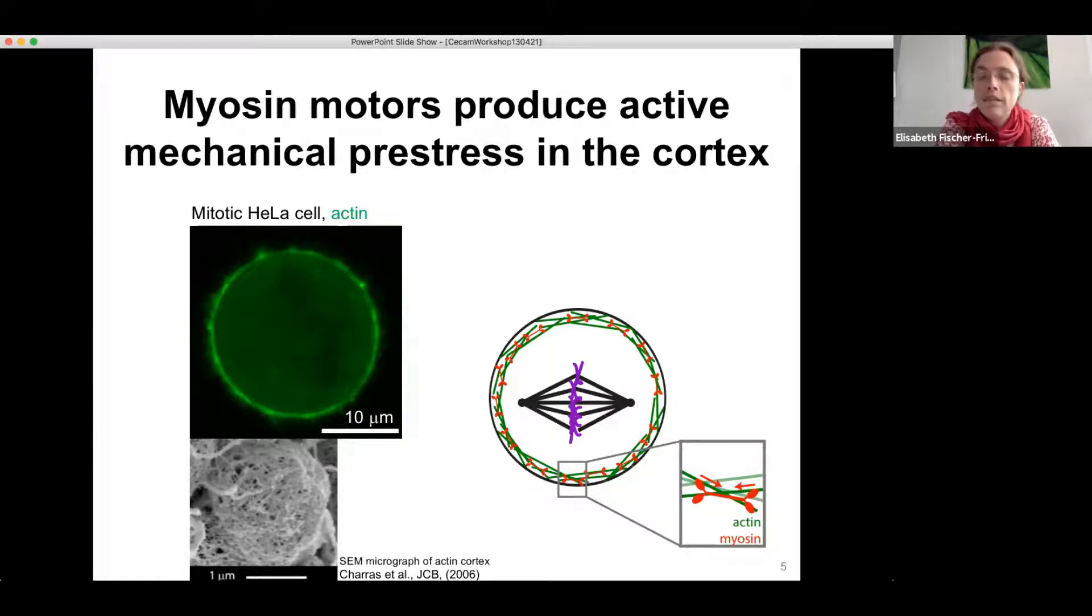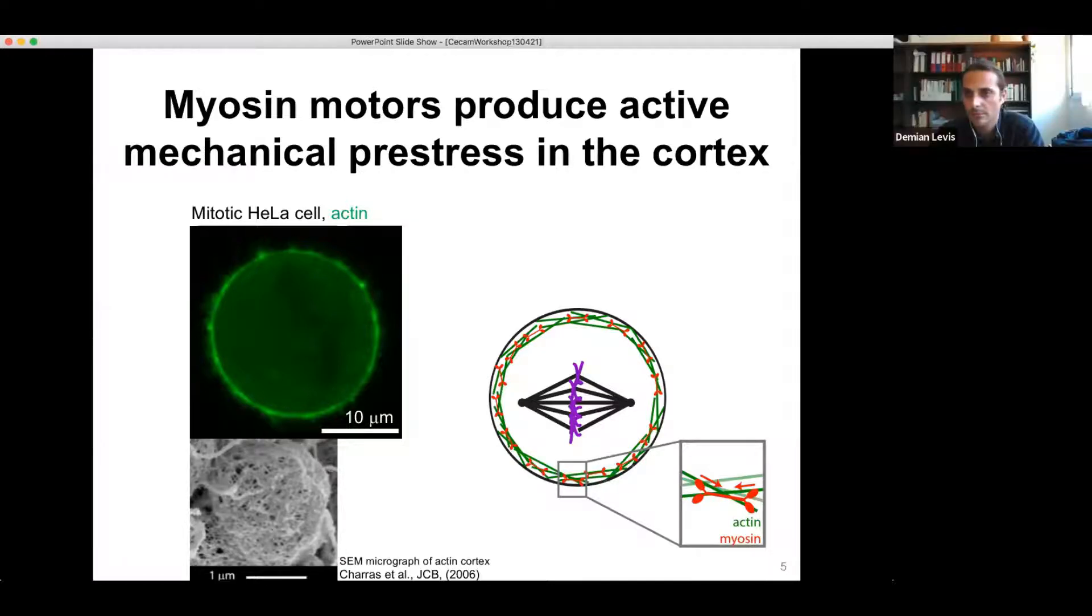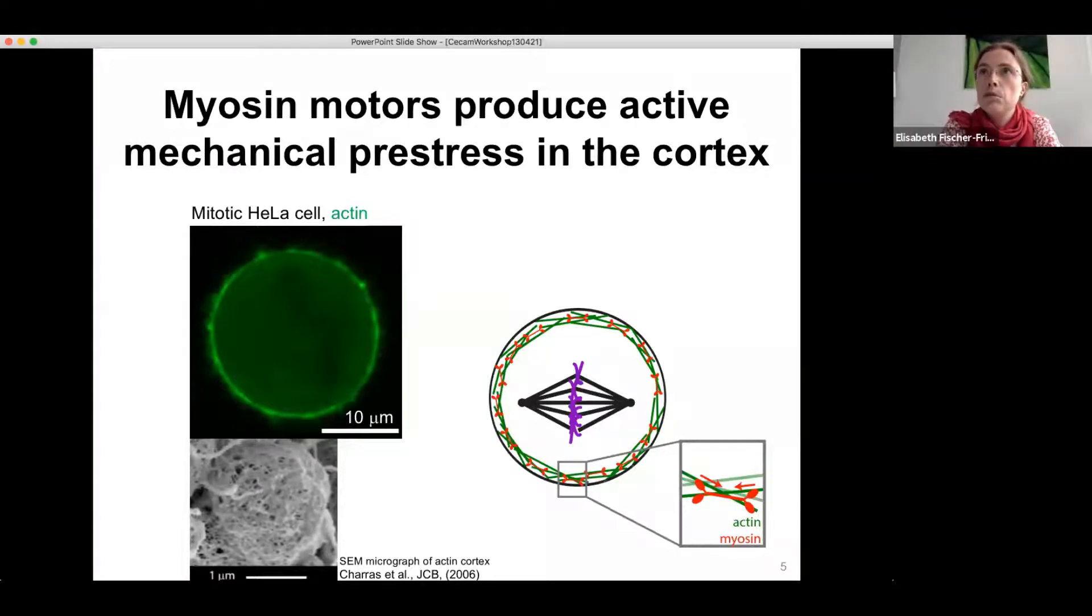And we do not only have actin inside the actin cortex. We also have other associated proteins. And one important one is myosin or myosin motor proteins indicated here in red in the schematic. And these are proteins that attach to the actin polymers and actually pull on them. So they essentially act as force dipoles. And this is an active process. So it consumes the biological fuel ATP and thereby generates macroscopic contractile pre-stress in this actin polymer shell. So this actin polymer shell, the cortex is under mechanical tension, even in spite of no presence of actual mechanical deformation.